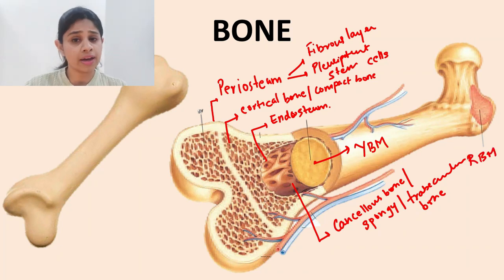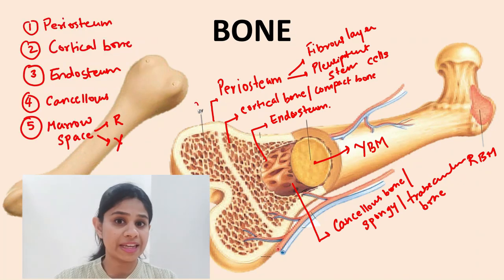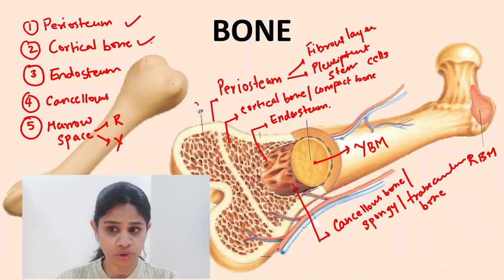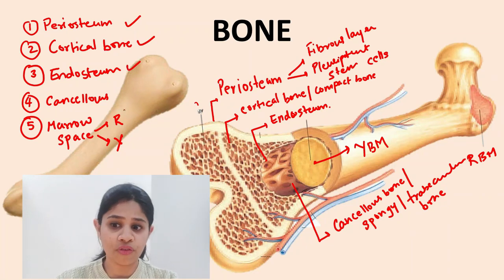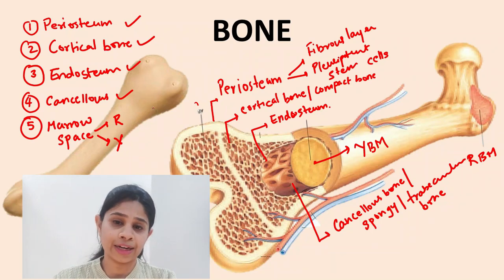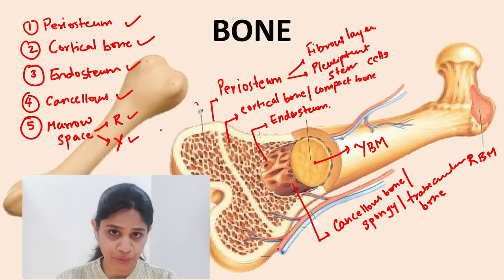The red bone marrow has hematopoietic importance as it helps in the production of blood cells. So the basic layers of bone are: periosteum, followed by cortical bone, then endosteum, then cancellous or spongy bone, which encloses a marrow space harboring either red bone marrow or yellow bone marrow.